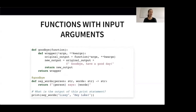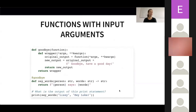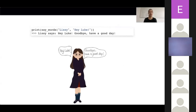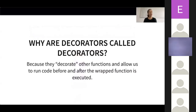Take a guess at how the output of the new print statement will look like. We can now decorate functions with arbitrary input arguments, like in this case strings with Lizzie and 'hey Luke'. We won't dig deeper into the topic of decorators today — there is so much more to discover. As a last piece of information, I want to ask you: why are decorators called decorators? Think about that for a moment.